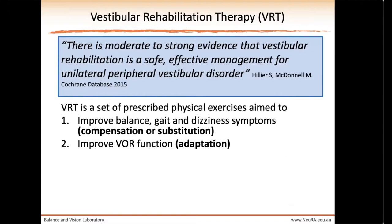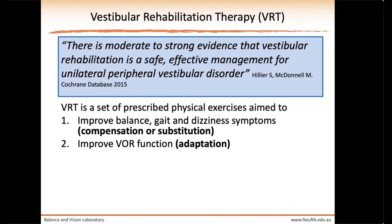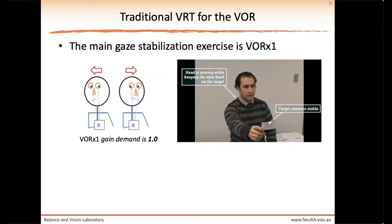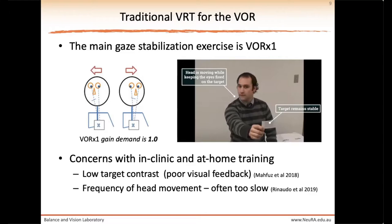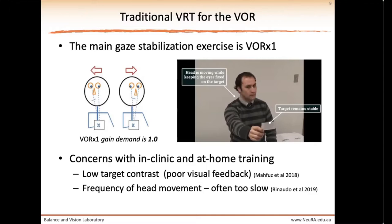Ideally, the goal is to improve or adapt the VOR. Yet despite improvements in symptoms and partial return to daily function, there has been minimal documented evidence that commonly used exercises actually improve the high-frequency VOR, which is directly linked to balance organ function. Current best practice guidelines recommend gaze stabilisation exercises, with the main exercise being VOR times one — the patient actively moves their head while focusing on a stationary target. Challenges include these exercises being performed in low contrast at relatively low head frequencies, which are not vestibular-specific.